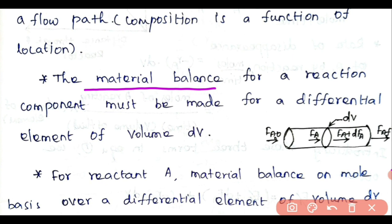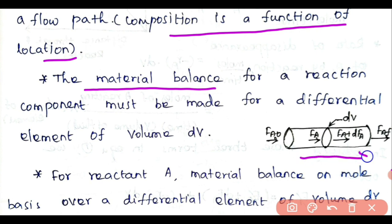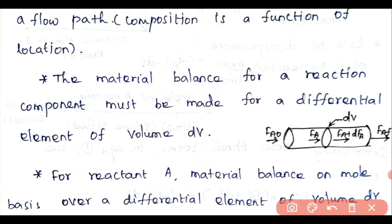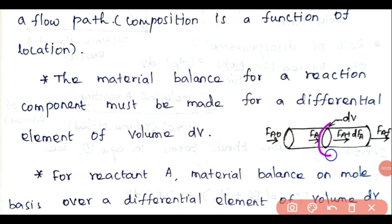To derive the performance equation, we first have to write the material balance for the reaction component. In a batch reactor and mixed flow reactor the composition is uniform throughout the reactor, so we write the material balance for the whole reactor. But in a plug flow reactor, composition is not uniform — it varies along the flow length. So we write the material balance for a differential element of volume dV, assuming uniform composition throughout that thin section.